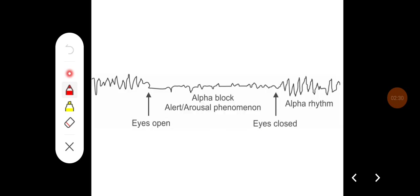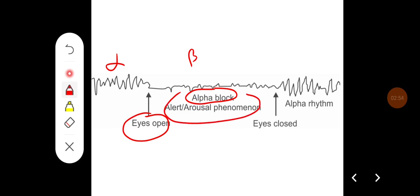Here you can see the normal alpha rhythm when the person is relaxed with eyes closed, and when the eyes are opened, the alpha waves are converted into beta waves — that is, alpha is replaced with beta rhythm — which is also called alpha block, or the alert or arousal phenomenon. Again, when eyes are closed, the alpha waves predominate again in the EEG.